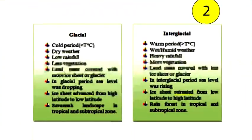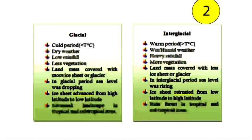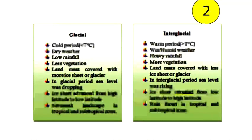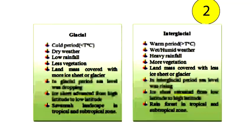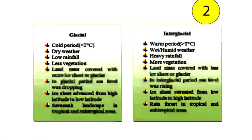In the glacial period, sea level was dropping; on the other hand, in the interglacial period, sea level was rising. Ice sheets advanced from higher latitude to lower latitude during glacial, and retreated from lower latitude to higher latitude during interglacial. Savannah landscape is found in the tropical and subtropical zone during the glacial period; on the other hand, rain forest is the tropical and subtropical zone in the interglacial period.